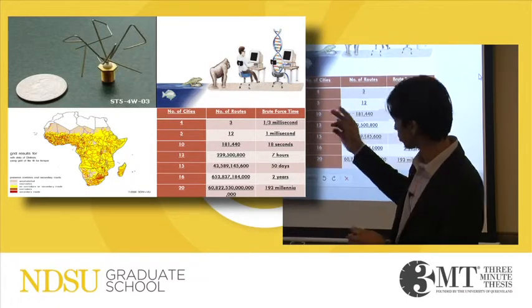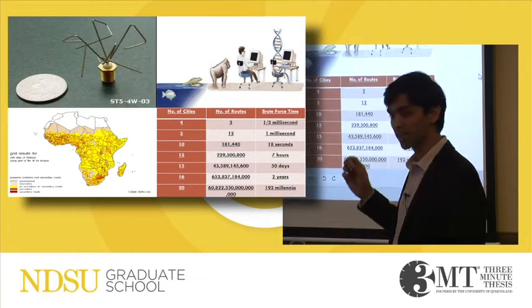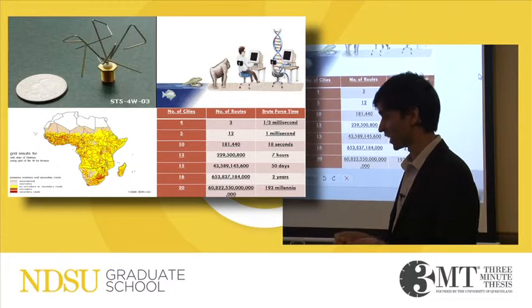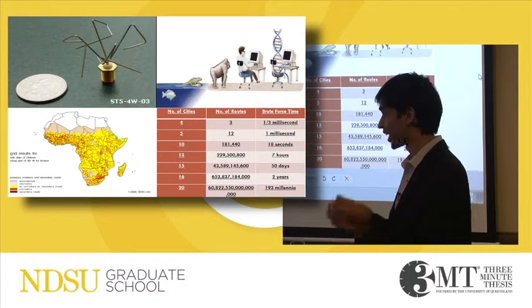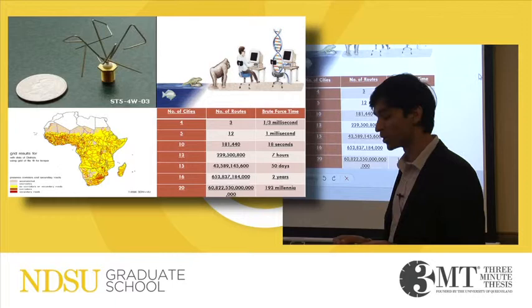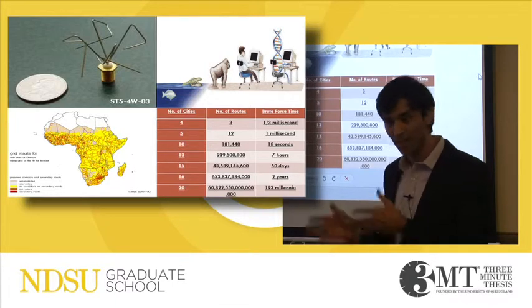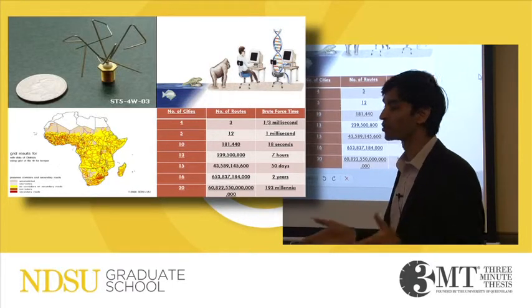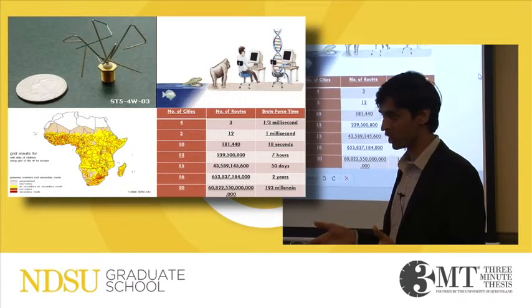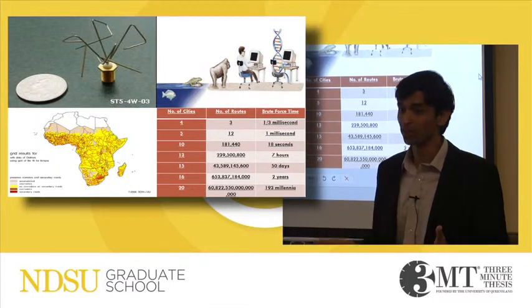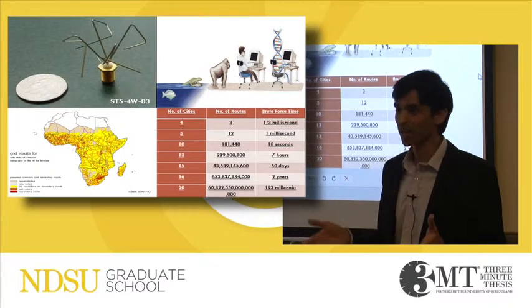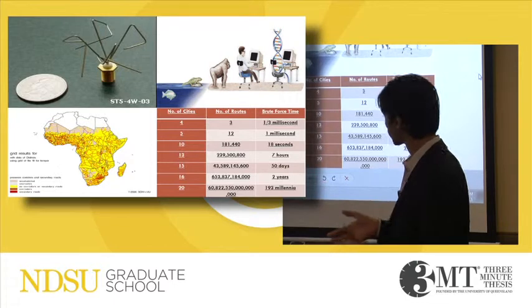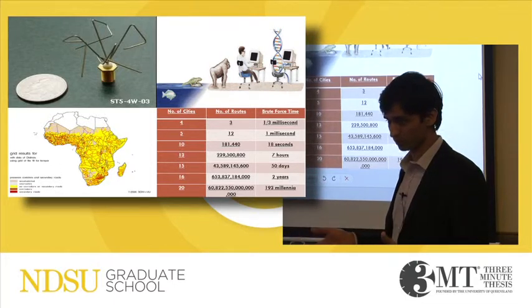The twisted thing that you see on your top left, beside that coin, is actually a communications antenna of a satellite. And it's highly unlikely that a human expert might have actually arrived at it. Welcome to the world of evolutionary algorithms, where an algorithm is actually an organism. I'm Deepak Dharu, doing my thesis in computer science on evolutionary algorithms.